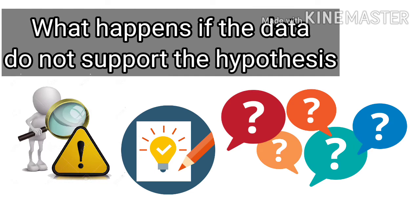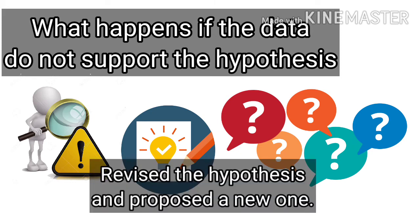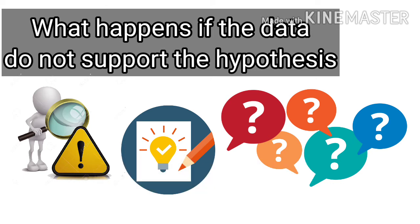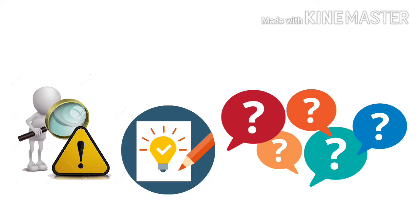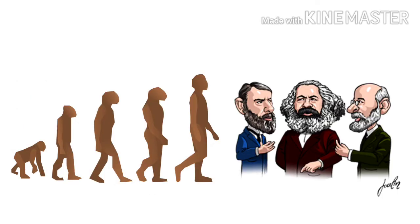What happens if the data do not support the hypothesis? In such a case, a scientist can revise the hypothesis or propose a new one based on the data from the experiment. A new experiment must then be designed to test the revised or new hypothesis.